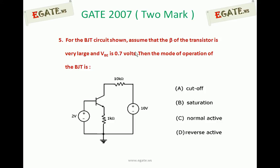For the BJT circuit shown, assume that Beta of the transistor is very large and VBE is 0.7 volts. The question asks for the mode of operation of the BJT: (a) cutoff, (b) saturation, (c) normal active, or (d) reverse active.